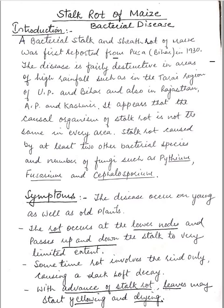It appears that the causal organism of stock rot is not the same in every area. This stock rot is caused by at least two other bacterial species and a number of fungi such as Pythium, Fusarium, and Cephalosporium.